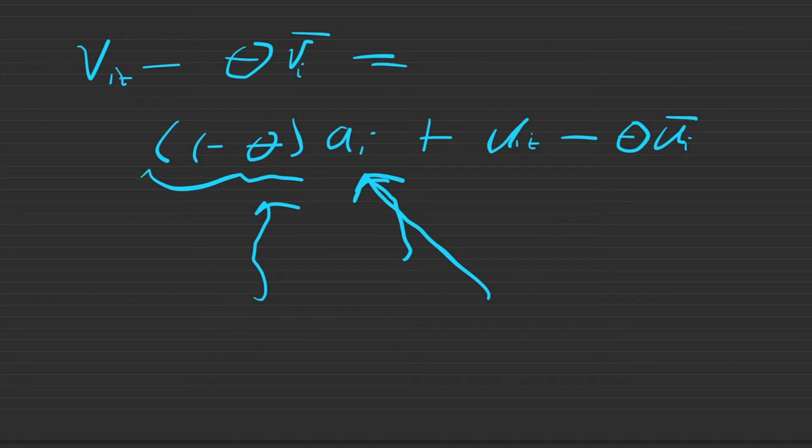So recall that random effects approaches fixed effects as theta approaches 1. As theta approaches 1, ai approaches 0. So we are attenuating ai in the error term as theta grows.